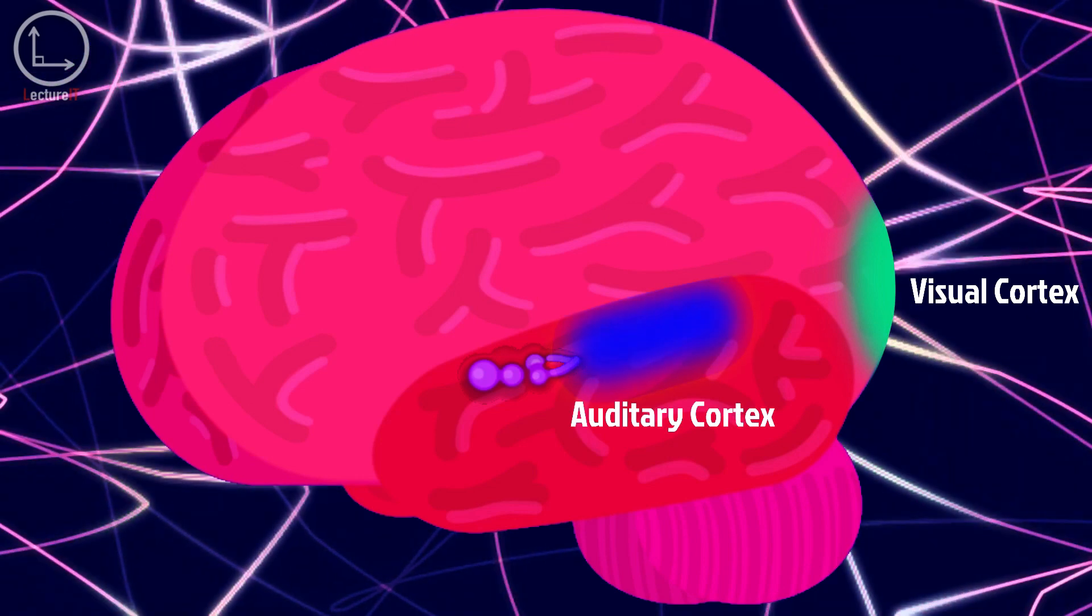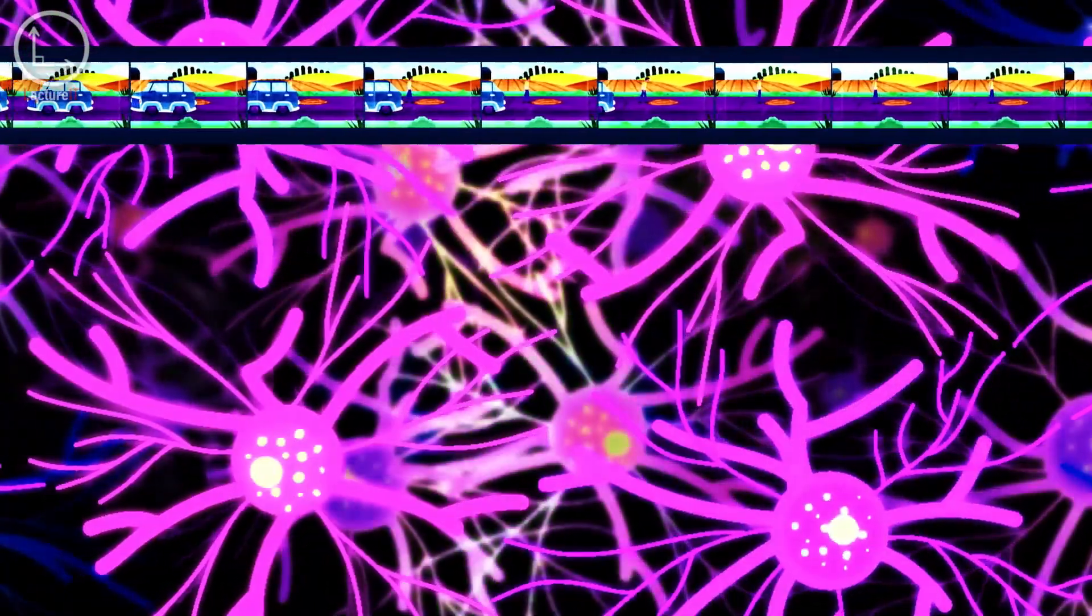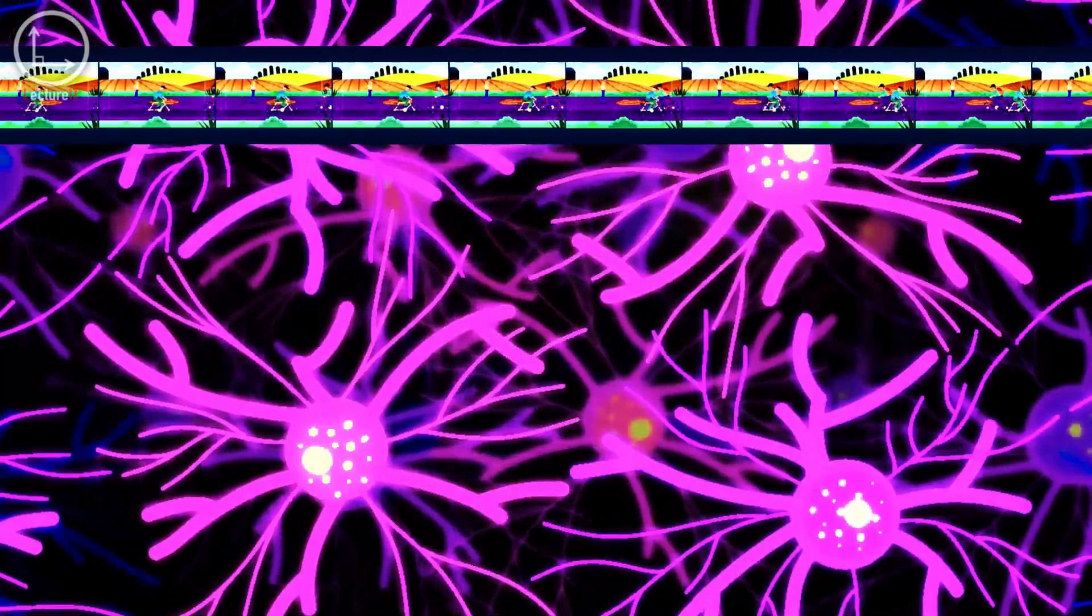During this phase, the hippocampus replays the memory trace through neuronal firing patterns, strengthening the connections between relevant neurons in the cortex.